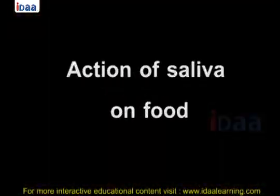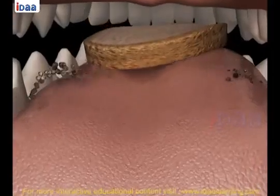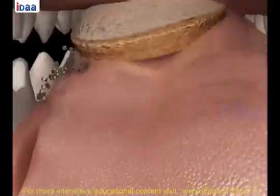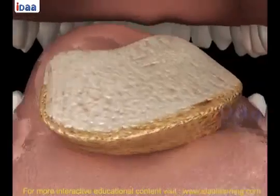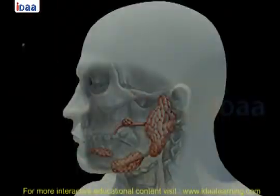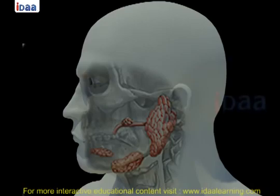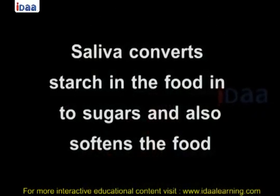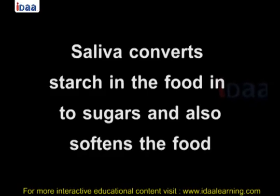Action of saliva on food. During chewing, food mixes with saliva. Saliva is secreted from salivary glands located on the lower jaw between the tongue and teeth. Saliva converts starch in the food into sugars and also softens the food.